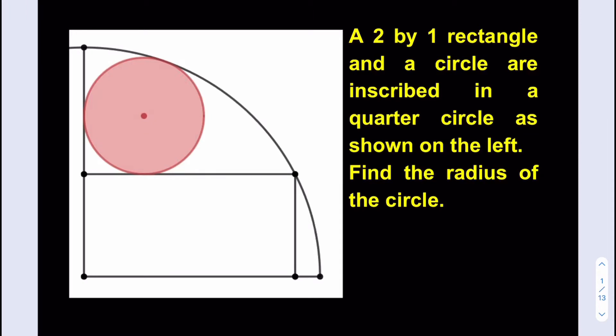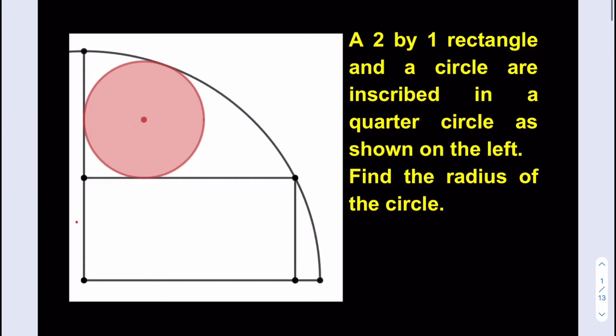So now we do have a rectangle, which is 2 by 1. That's pretty interesting. It's not a square. Remember in one of our previous problems we had a square inscribed, but this time it's just a rectangle. Okay, so it's 2 by 1. We do not know the radius of the quarter circle, but we can actually calculate it.